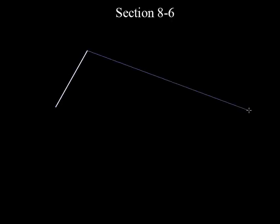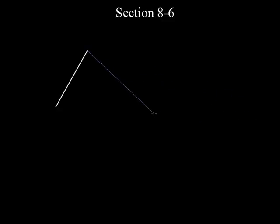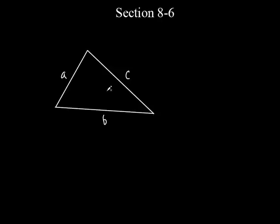Let's make a triangle and call the sides A, B, and C. It's not a right triangle, but we're going to be able to solve for some things depending on what they give you. We'll use two laws. The first one is called the law of sines — the trig function sine is involved, and now we don't have to have only a right triangle.